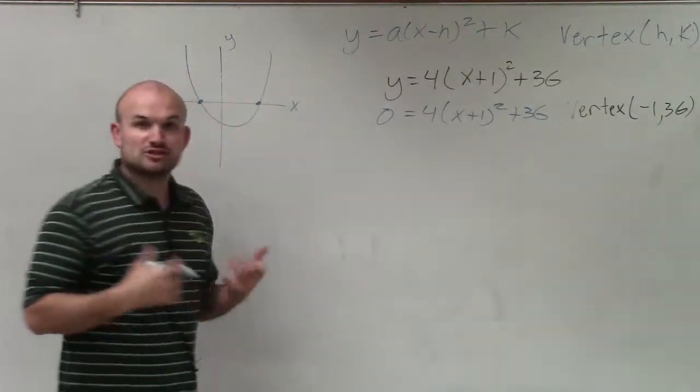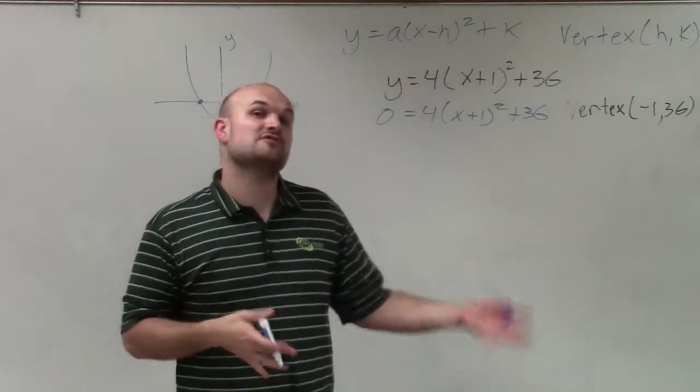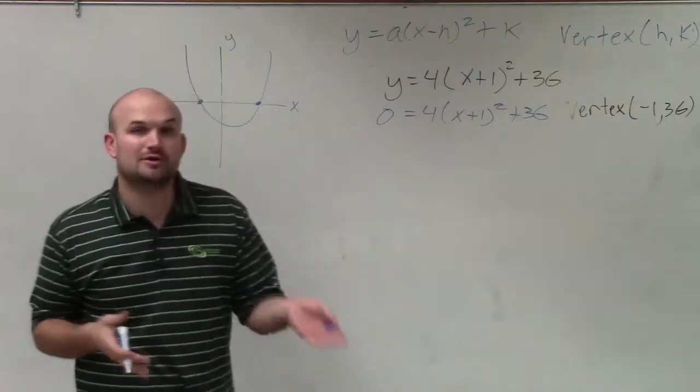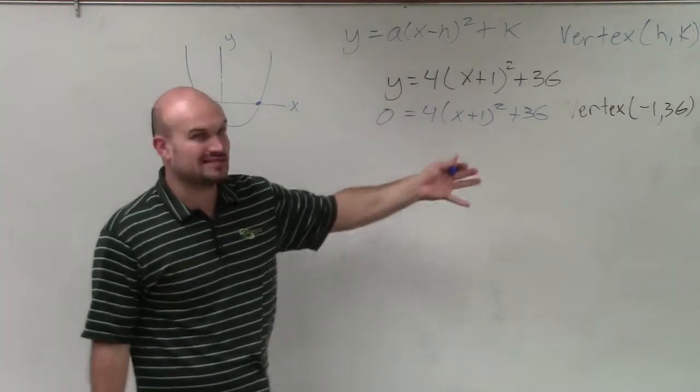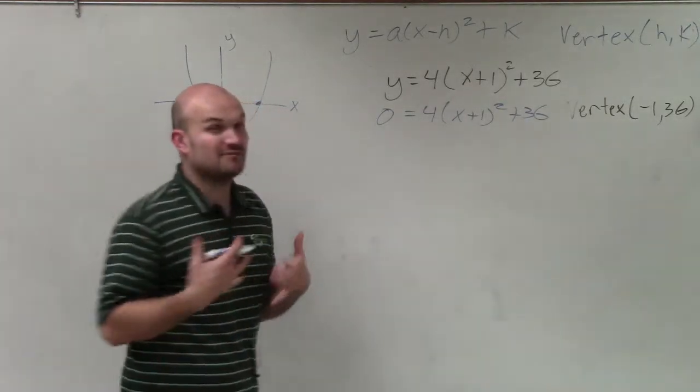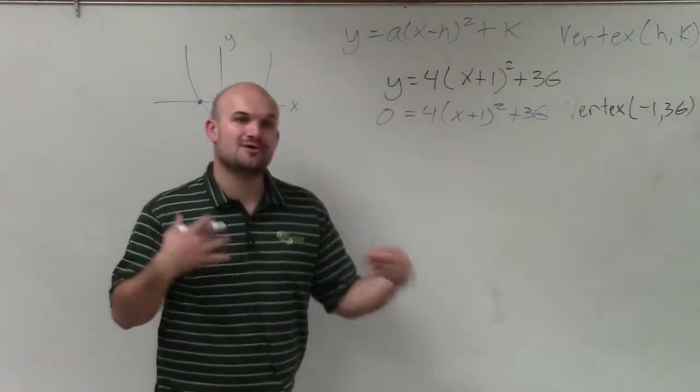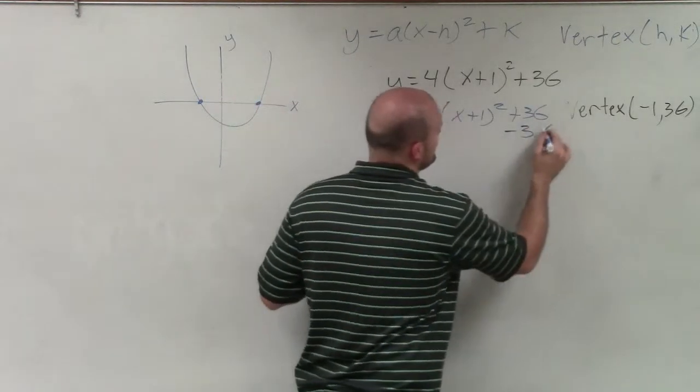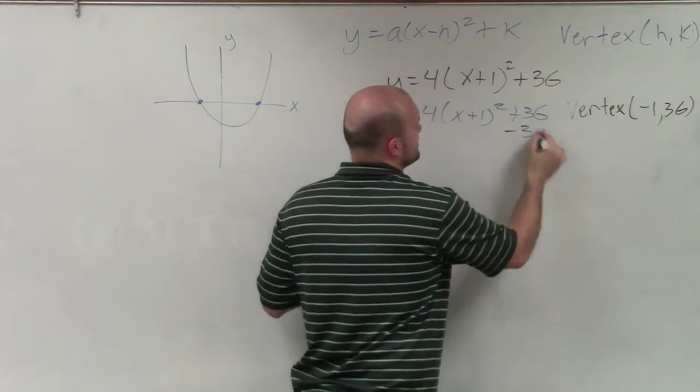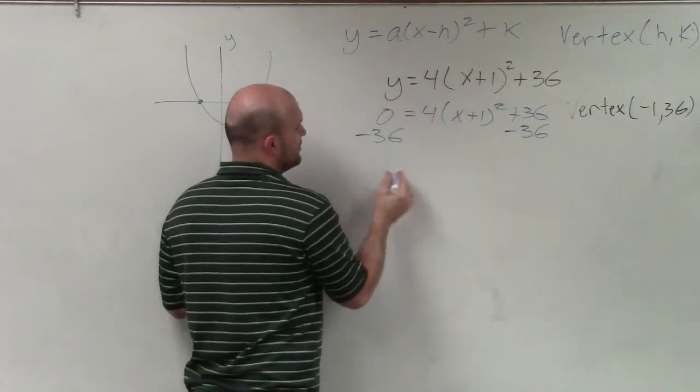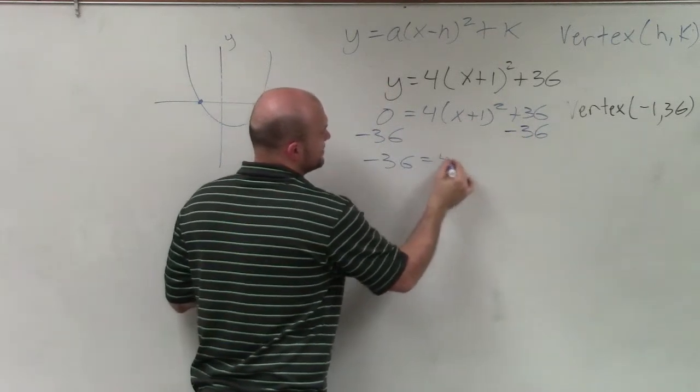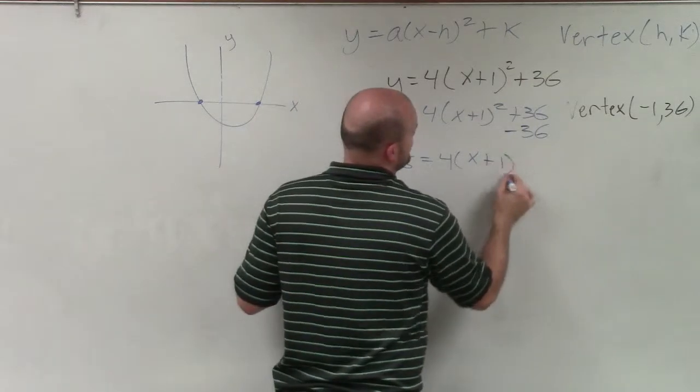So I'm going to solve applying the square root method, which is pretty much using my inverse operations and then taking the square root to undo the squaring of x plus 1. But first, I have to use my inverse operations using the reverse order of operations. So the first thing I'm going to undo from my x is I'm going to subtract 36 on both sides. So I have negative 36 equals 4 times x plus 1 squared.